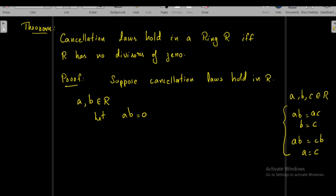We have to show there are no divisors of zero in R — that is, either A = 0 or B = 0. Suppose A is not equal to zero. We can write A·B = 0 as A·B = A·0, since A·0 = 0. Using the left cancellation law, we conclude that B = 0. So if A ≠ 0, then B must be zero.